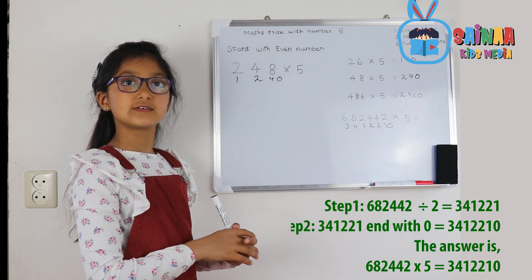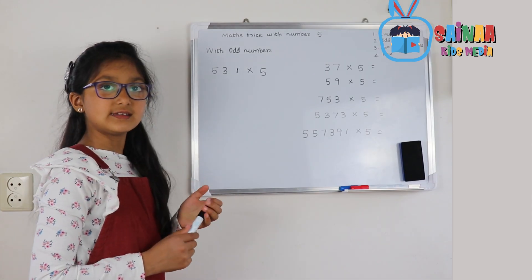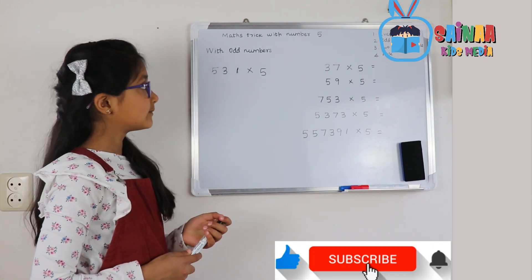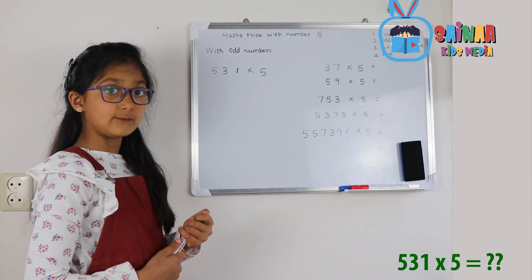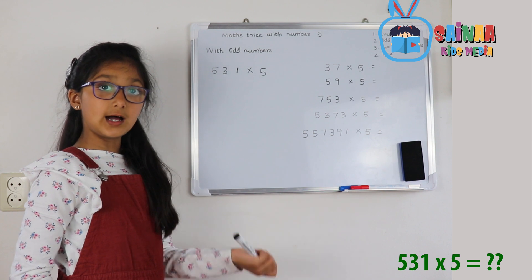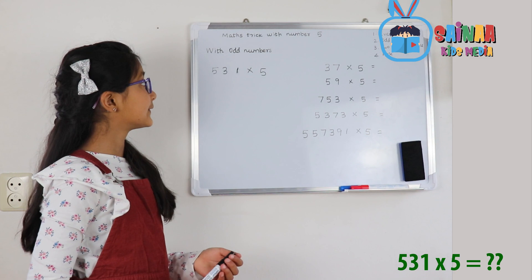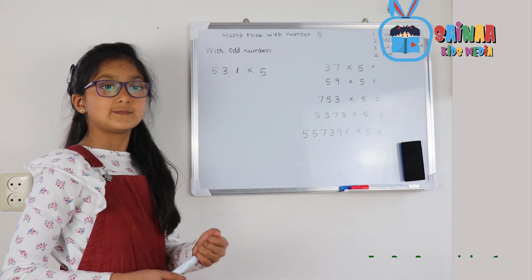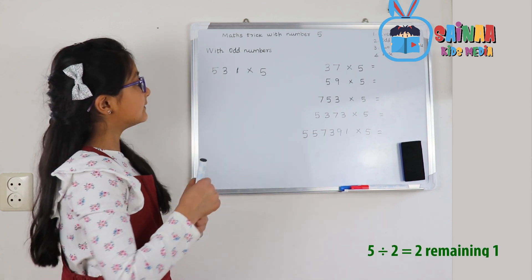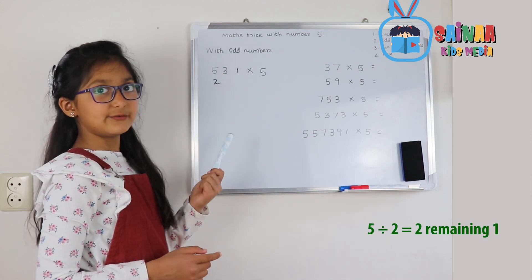Let's go to odd numbers — let's do the same with odd numbers. We need to do 531 times 5. We cannot split up odd numbers just like even numbers, so we need to take the closest even number. 5 has the closest number 4, which we can divide by 2, and we have a remaining 1 from the 5.